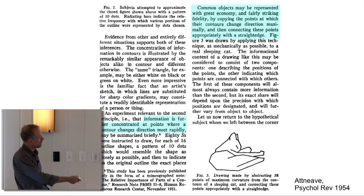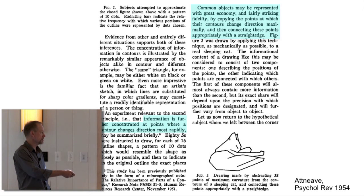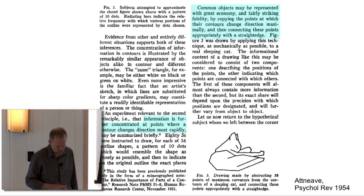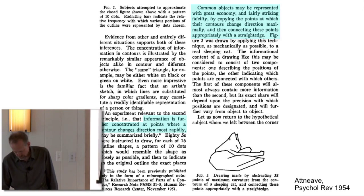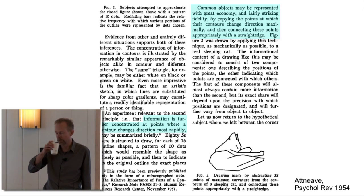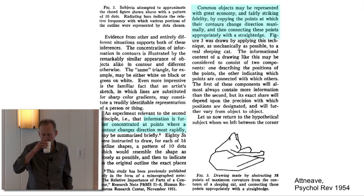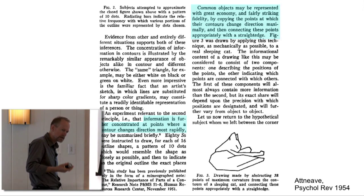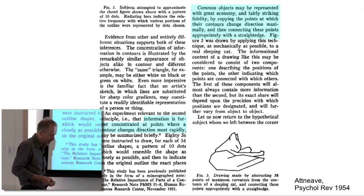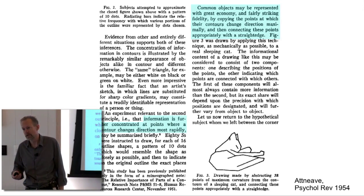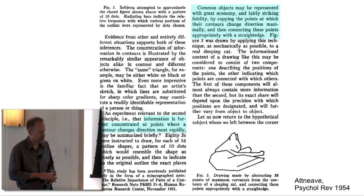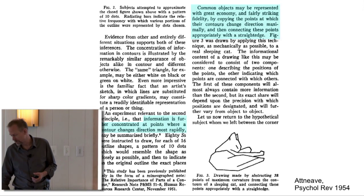He did that to make this famous drawing of a cat, Attneave's cat, based on doing that procedure with a photograph of a cat. That's a pretty informal, anecdotal sort of thing he did. But since then, he did psychophysics. Many other people have done psychophysics that support this idea that there's more information in regions of high curvature than in other parts of the shape.